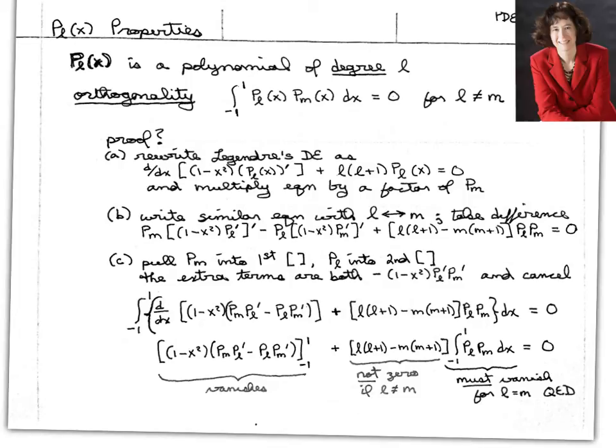Now let's integrate this whole equation in x over the full range of values of x from negative one to one. And let's look at what happens to each term. Well the first term in the integral is a total derivative. So it integrates to be just the stuff we were taking the derivative of and we evaluate it at the end points of the integral. But the one minus x squared will vanish at x equals one or x equals minus one. So this whole first term vanishes.